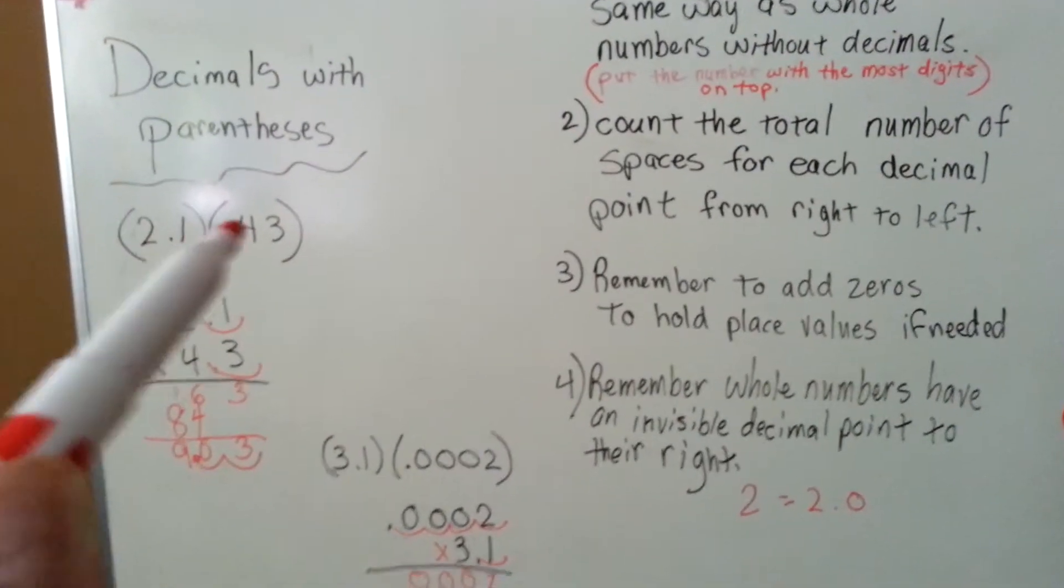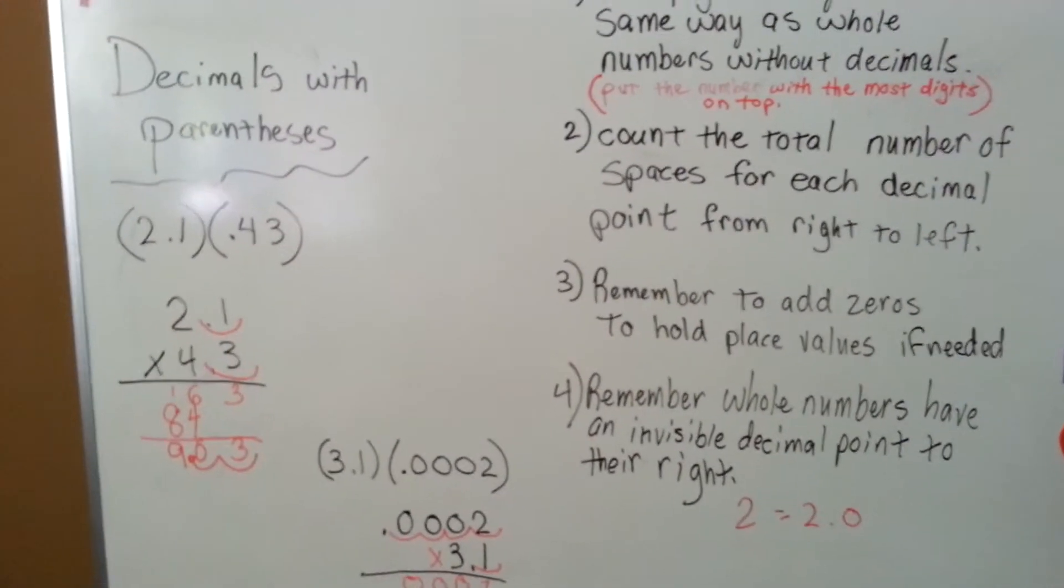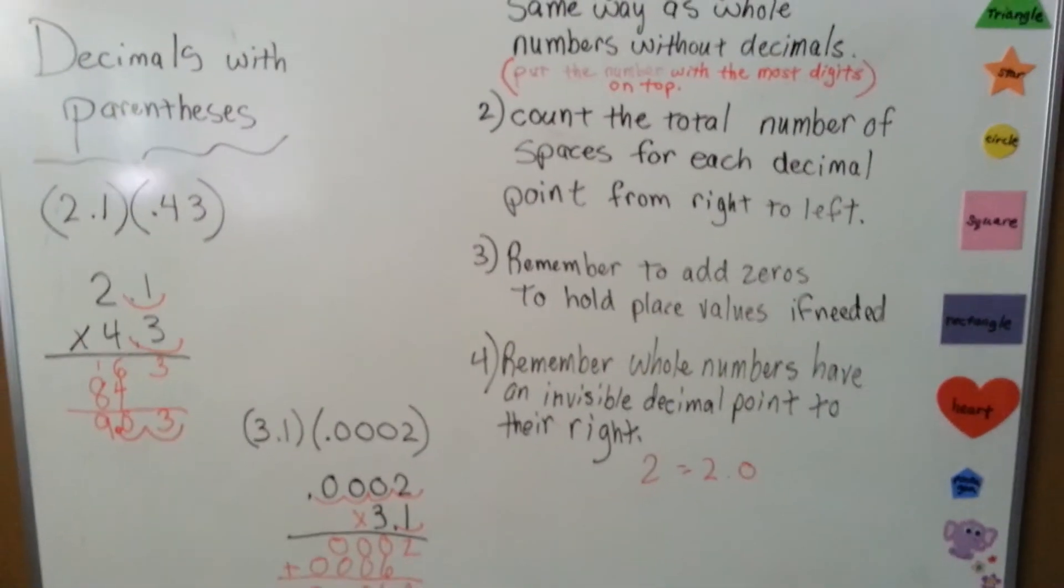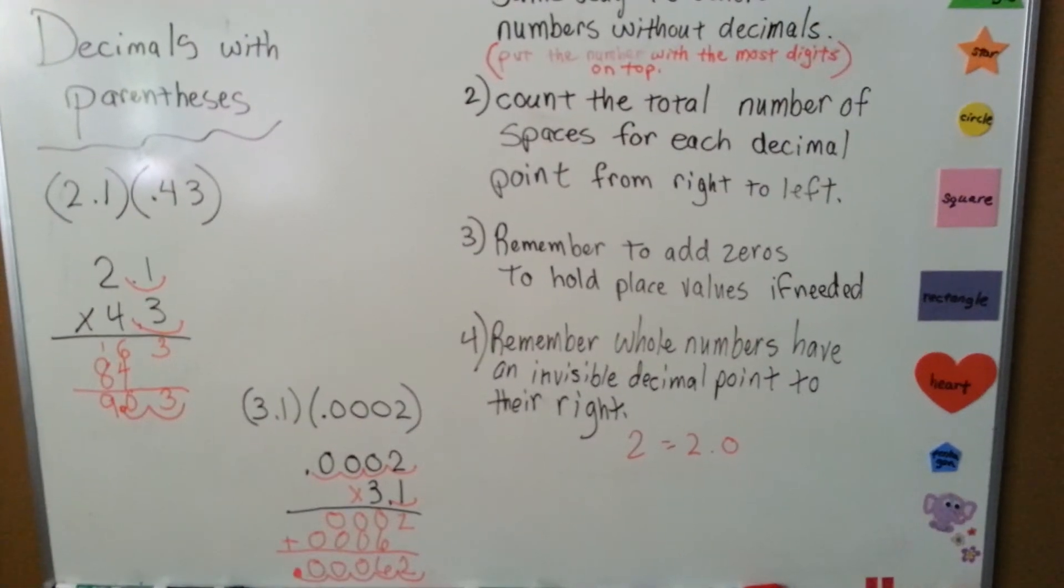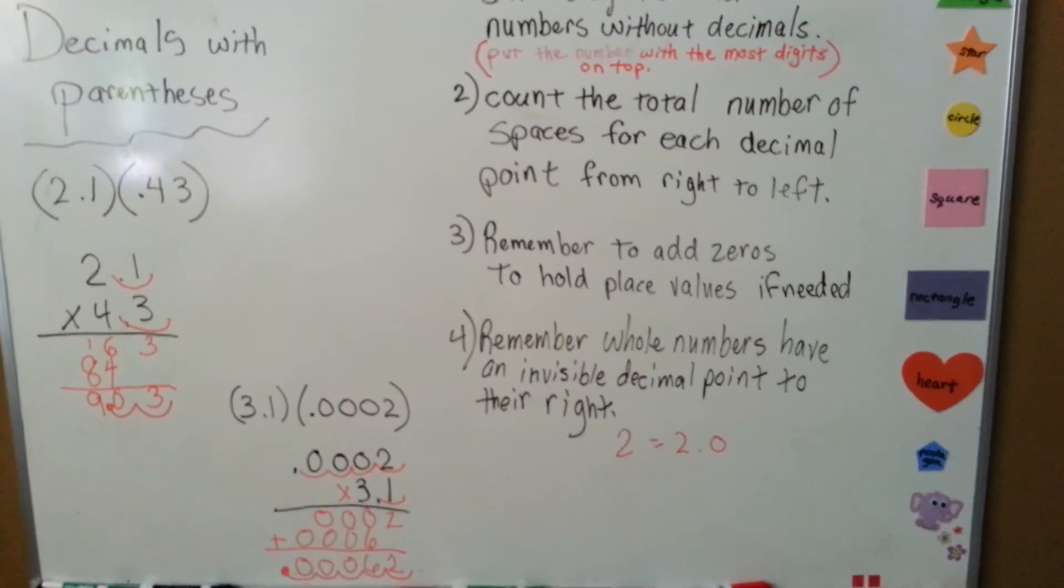Any time you see numbers side-by-side like this, that means to multiply. Remember that whole numbers have an invisible decimal point to their right.